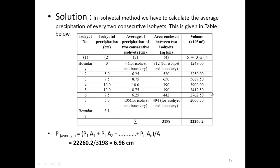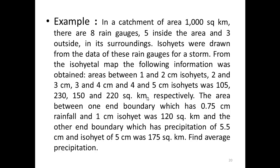The volume (P × A) is calculated for each interval. Dividing the total volume by the total enclosed area: P_avg = 22260.2 / 3198, giving P_avg = 6.96 centimeters. This is the average precipitation for the catchment area according to the Isohyetal Method.